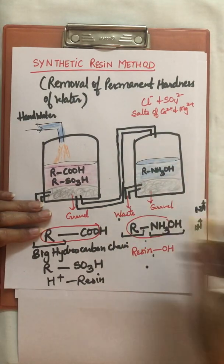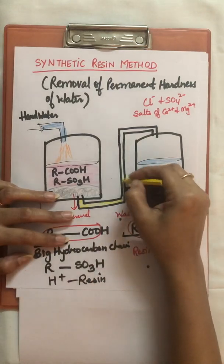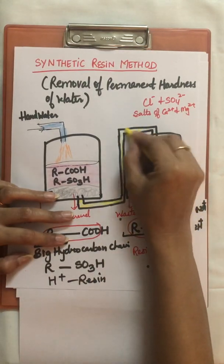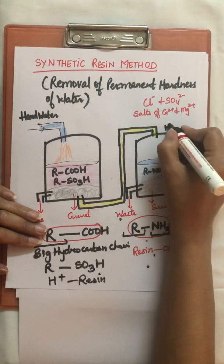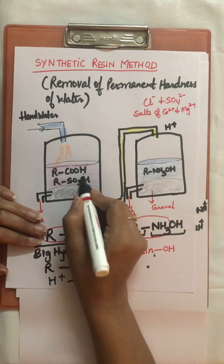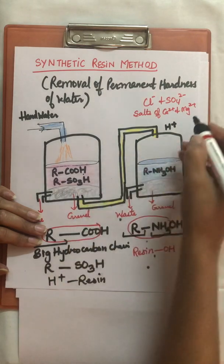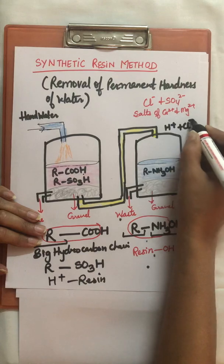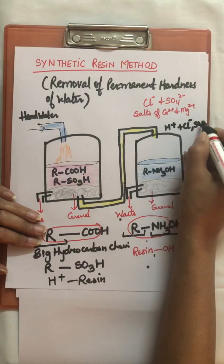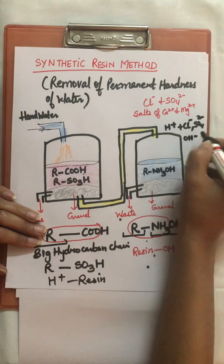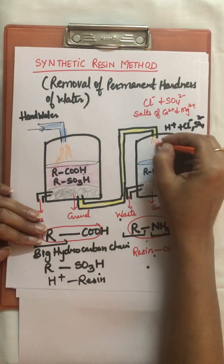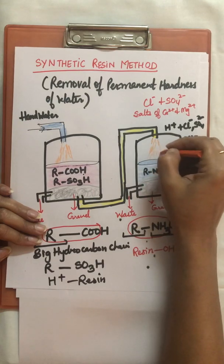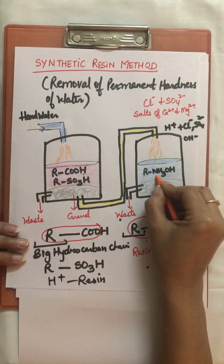This water from the first tank, which now contains only H+ cations and anions like Cl-, SO4^2-, and other hydroxyl ions, is sent into the second tank. When this water passes through the OH- resin layer in the second tank, further ion exchange takes place.